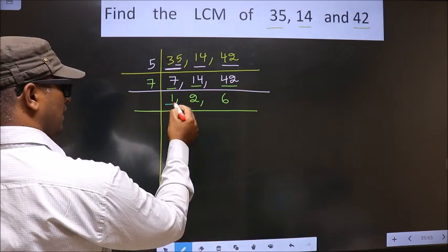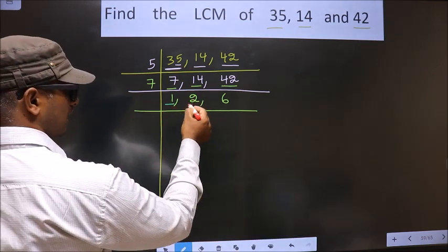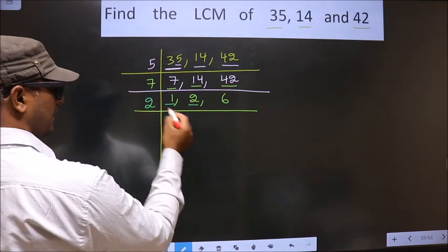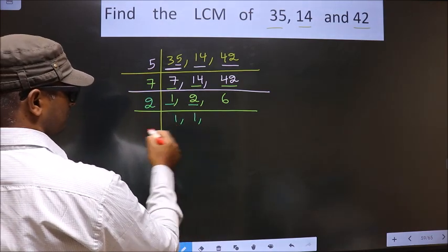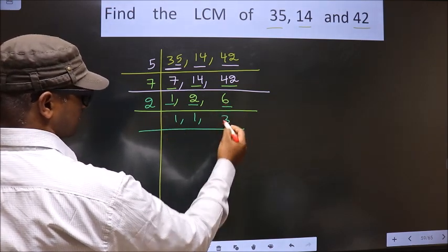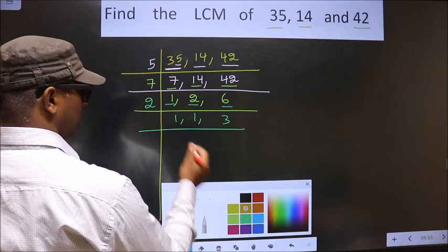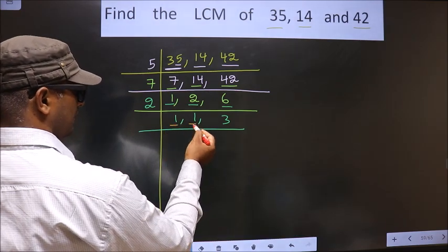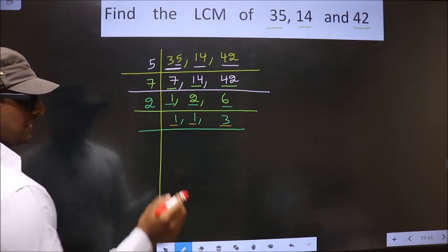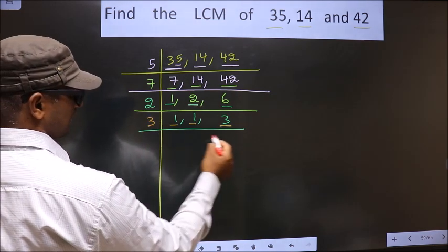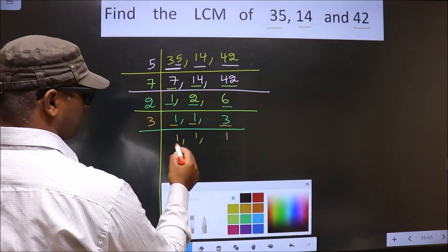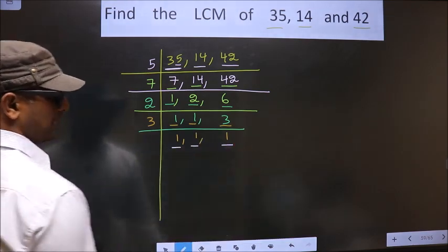Now we got 1 here, so focus on the other number, that is 2. 2 is a prime number, so we take 2 once 2. So now we got 1 in all the 3 places.